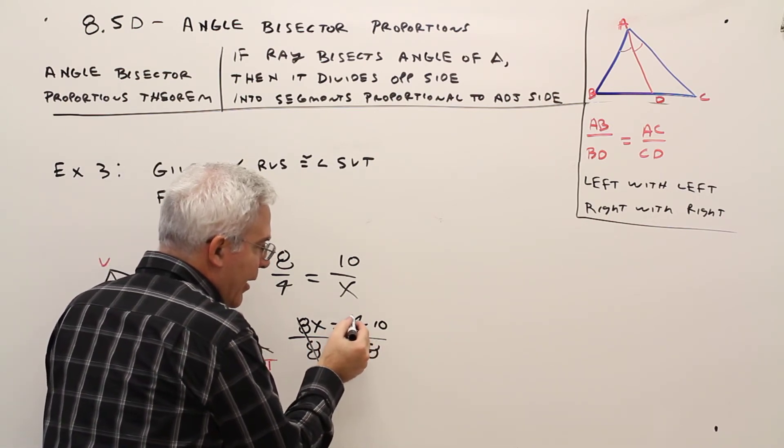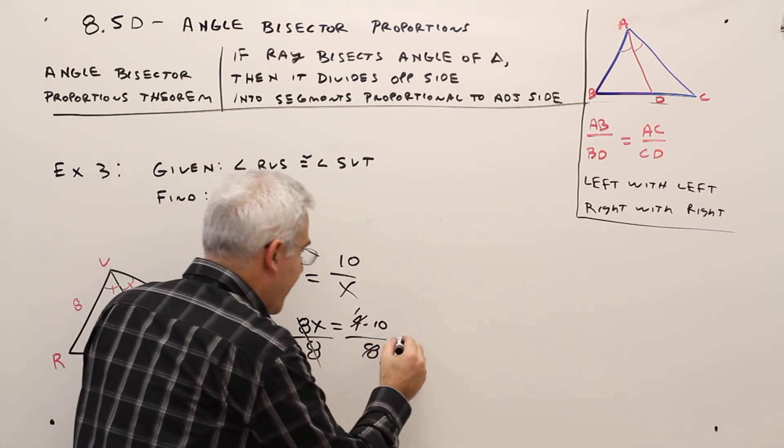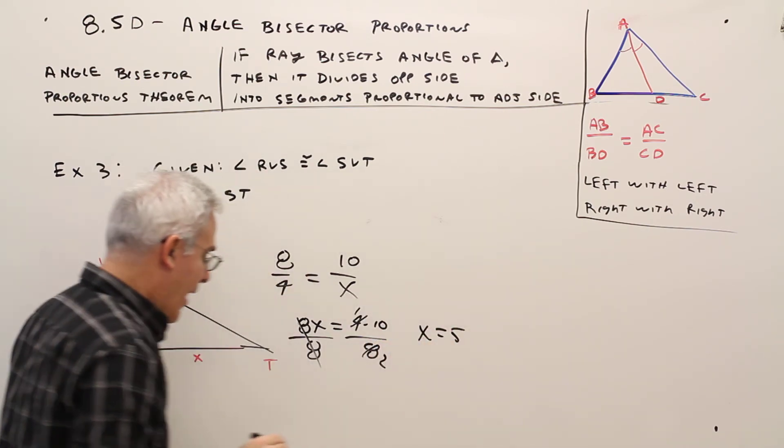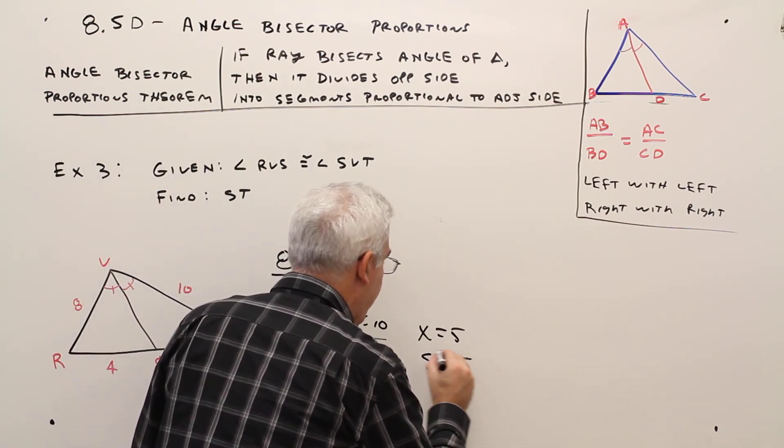4 over 8. Well, I'll just go 1 of those, 2 of those. 10 over 2 equals 5. So X equals 5. Technically they wanted ST. ST equals 5.